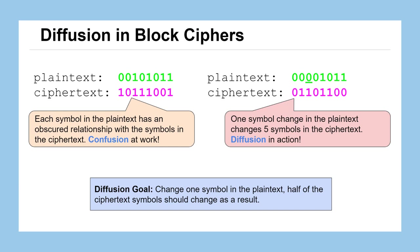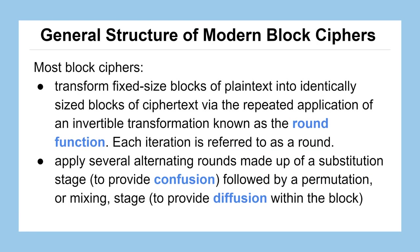Let's talk about how this happens — what is it about a block cipher that works differently than stream ciphers? Most block ciphers take a fixed-size block of plaintext — such as eight characters or 64 bits — and convert that into an identically-sized block of ciphertext by some repeated operations. Those operations need to be invertible, meaning undoable in the opposite direction, so we can decrypt our messages. This series of operations is what we call the round function. Each time we run through it we call that a single round, and each round can consist of a substitution stage, providing confusion, followed by a permutation or mixing stage to provide diffusion within the block.